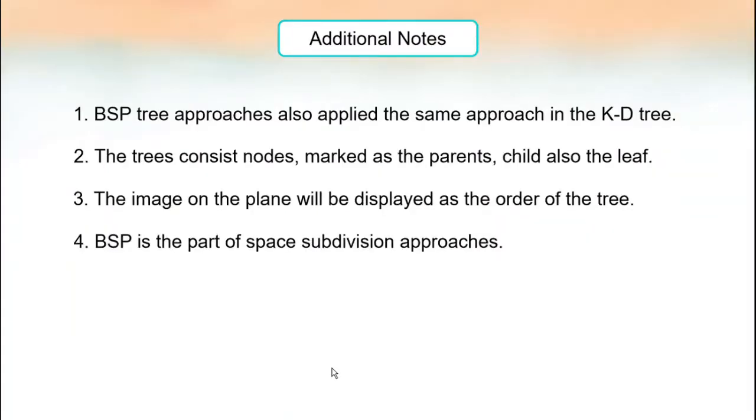The next one is additional notes for the BSP tree that I have understand. The first one is BSP tree approaches also apply the same approach in the K-D tree. The second, the tree consists nodes marked as the parents, child, also the leaf. The third, the image on the plane will be displayed as the order of the tree. The last one is BSP is the part of space subdivision approaches.